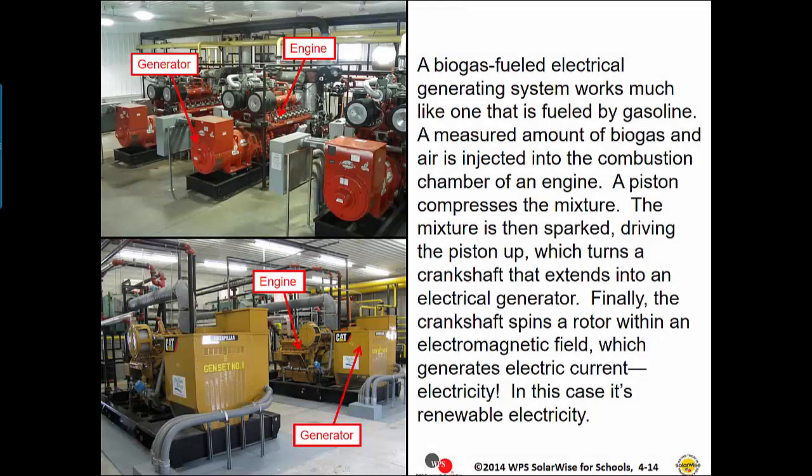A biogas-fueled electrical generating system works much like one fueled by gasoline. A measured amount of biogas and air is injected into the combustion chamber of an engine. A piston compresses the mixture. The mixture is then sparked, driving the piston up, which turns a crankshaft that extends into an electrical generator. Finally, the crankshaft spins a rotor within an electromagnetic field, which generates electric current — electricity. In this case, it's renewable electricity.